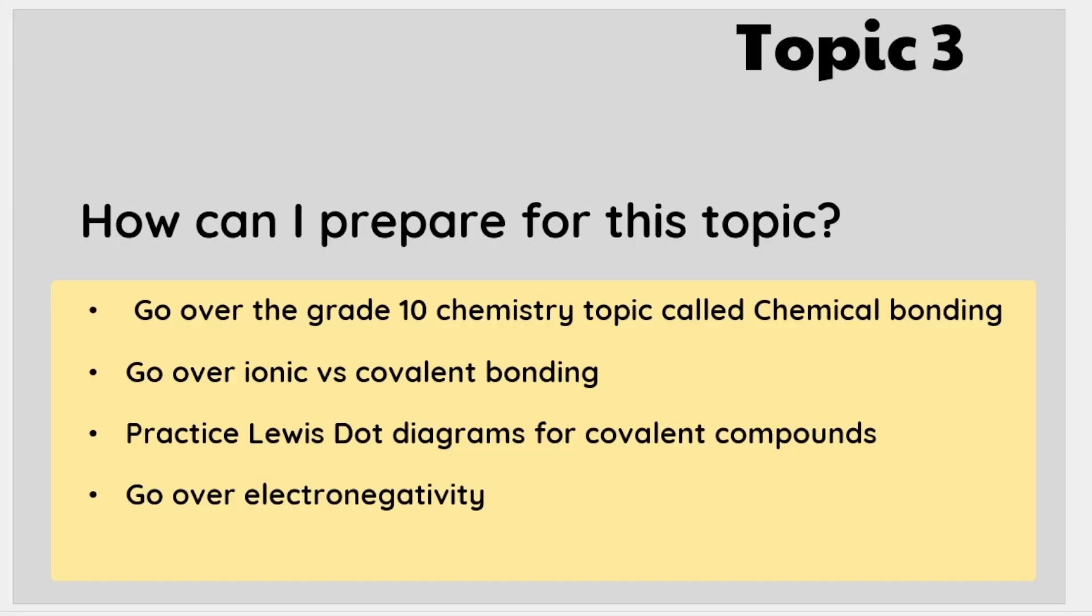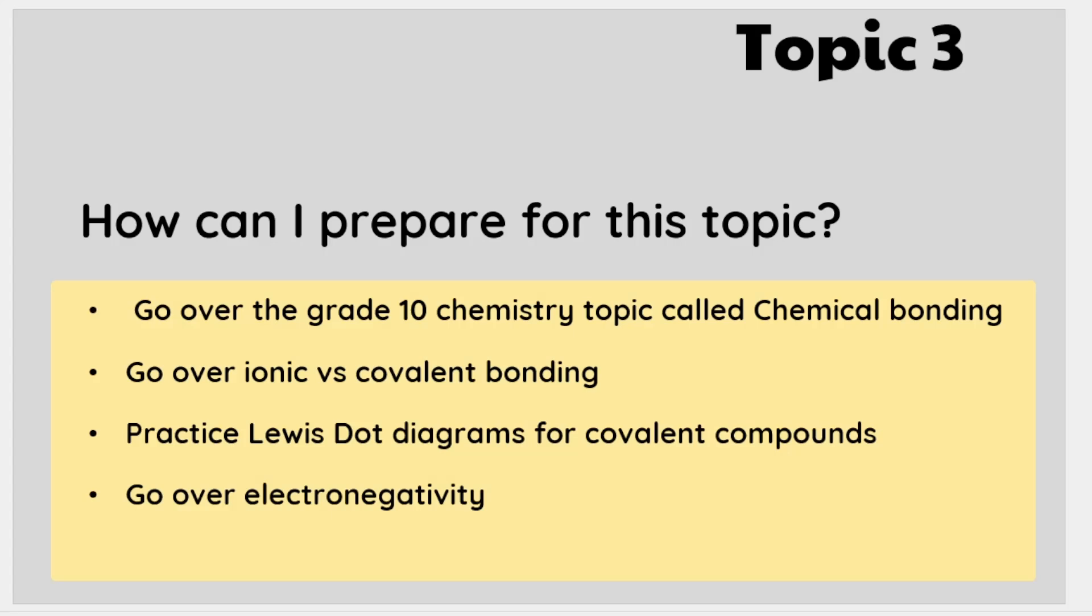So in order to prepare, you can go over the topic called grade 10 chemical bonding. So I have done videos on this on my channel, but it's basically ionic versus covalent bonding. How to draw the Lewis dot diagrams for covalently bonded compounds, understanding what valence electrons are, how to count the number of valence electrons, or how to determine the number of valence electrons, what electronegativity is.